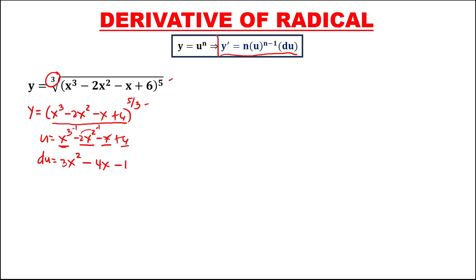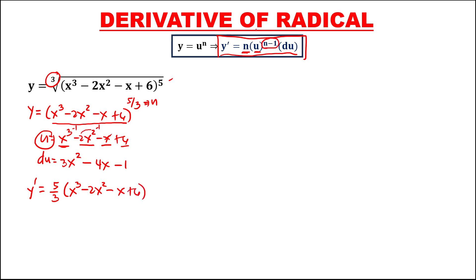Now apply the formula to find the derivative. We have n, where n is the exponent, so 5 over 3, then times u — x to the power 3 minus 2x squared minus x plus 6 — to the power n minus 1. Using the shortcut method: 5 minus 3 is 2, so we have 2 over 3. Then times du, where du is 3x squared minus 4x minus 1.